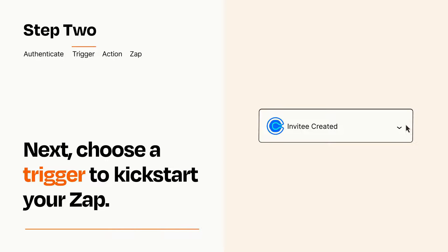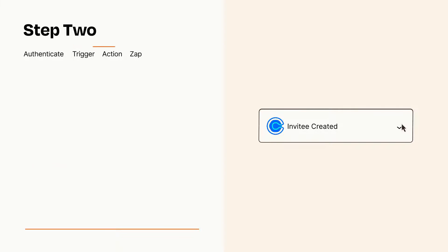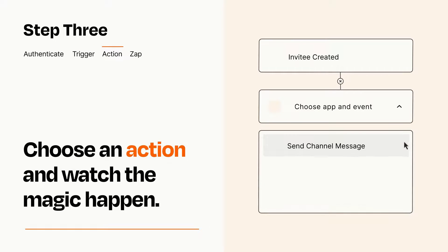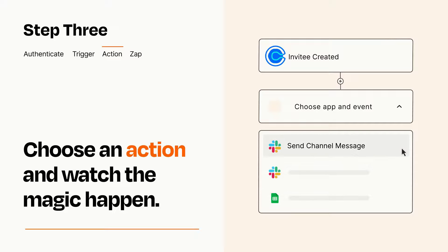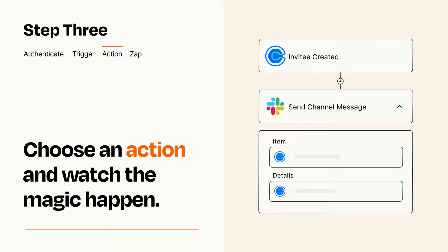This last part is where the magic happens. Choose the action you want to happen in your target app. You'll see a bunch of fields where you can specify the details of your Zap. You can type free form text or pull data in from your trigger step as needed.